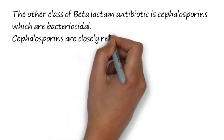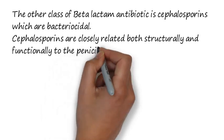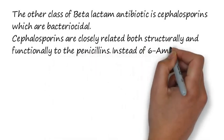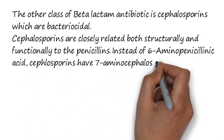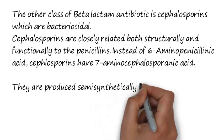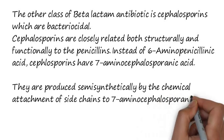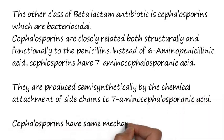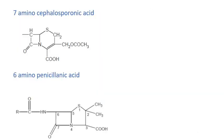Cephalosporins are closely related structurally and functionally to the penicillins. Instead of six aminopenicillanic acid, cephalosporins have seven aminocephalosporanic acid. This is a structural feature. They are produced hemisynthetically by the chemical attachment of a side chain to seven aminocephalosporanic acid. Cephalosporins have the same mechanism of action as penicillin.